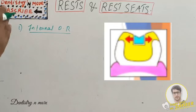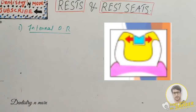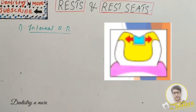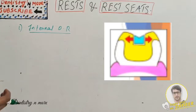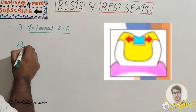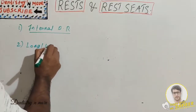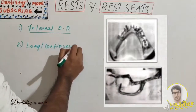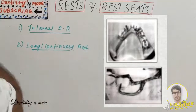Advantages of the internal occlusal rest include: it facilitates elimination of a visible clasp arm buccally — solving the most common aesthetic problem with rests — and it is not visible externally. It also permits the location of the rest seat in a more favorable position in relation to the tipping axis of the abutment because it is positioned inside the tooth.